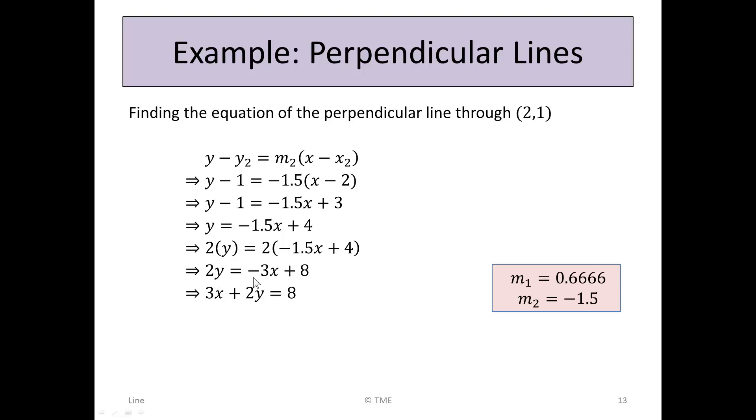We have 2y = -3x + 8. Taking 3x to the other side: 3x + 2y = 8. This is the equation of the line perpendicular to our original through the point (2, 1).